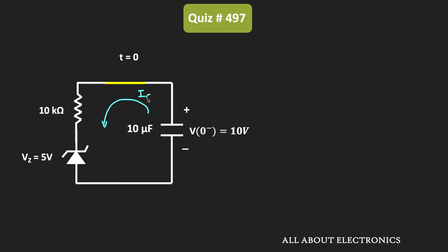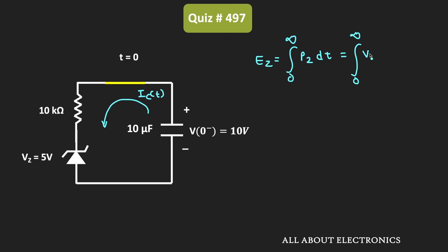Let's say this current is equal to Ic. The total energy dissipated across this Zener diode can be given as the integration from 0 to infinity of P times dt, where P is the total power dissipated across this Zener diode. Further, we can write it as integration from 0 to infinity of Vz times Ic times dt, where Vz is the voltage across this Zener diode and Ic is the current flowing through it. We already know that the Zener voltage is equal to 5V, so whenever the Zener diode is conducting, the voltage Vz is equal to 5V.